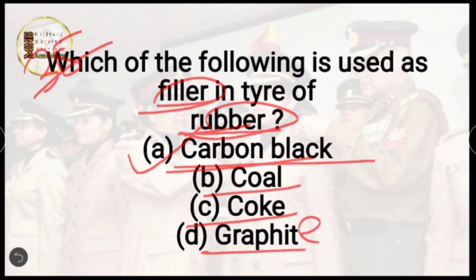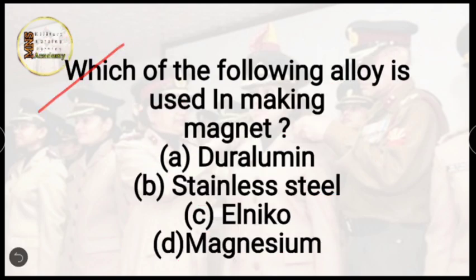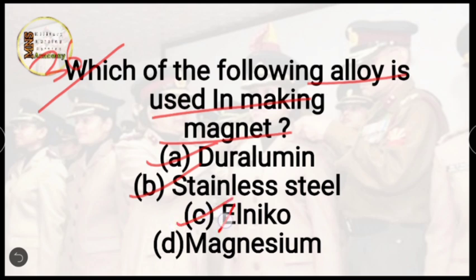Question number 36: which of the following alloys is used in making magnets? Options are duralumin, stainless steel, alnico, or magnalium. The correct answer is alnico. Alnico is an alloy — AL stands for aluminium, Ni for nickel, and it also contains cobalt and iron. These four elements make up the alnico alloy.